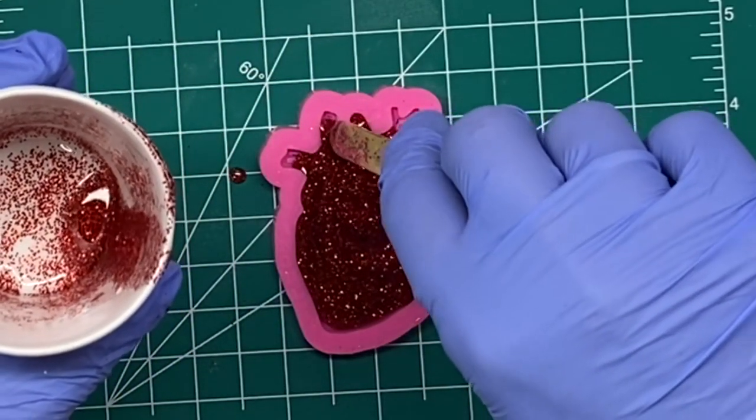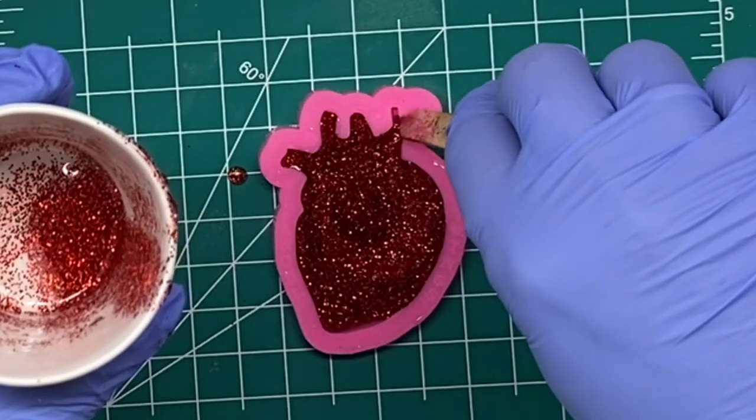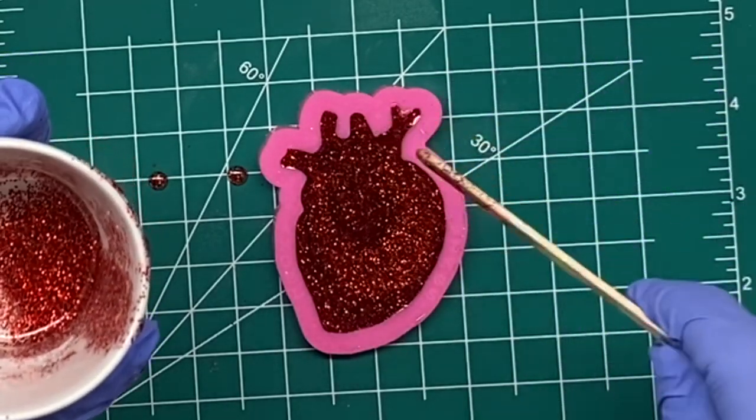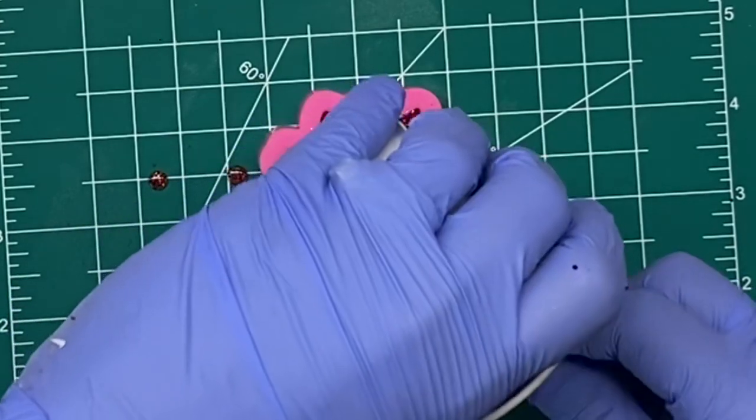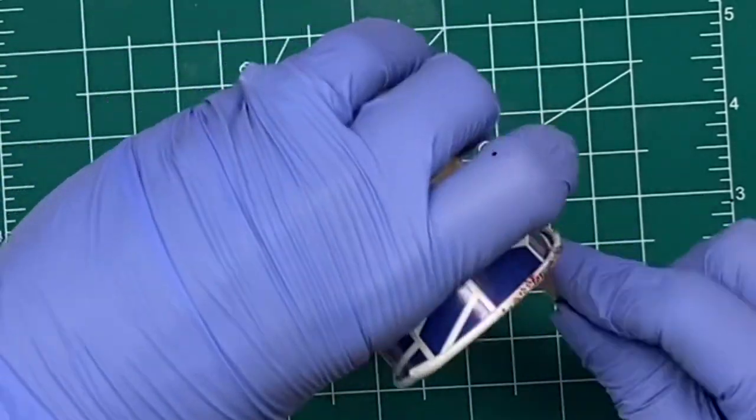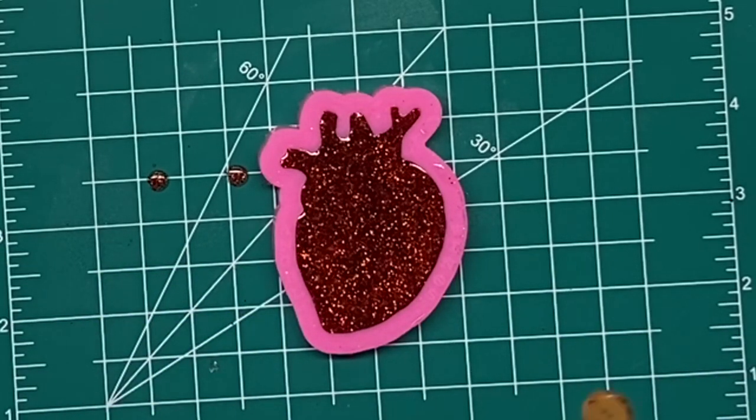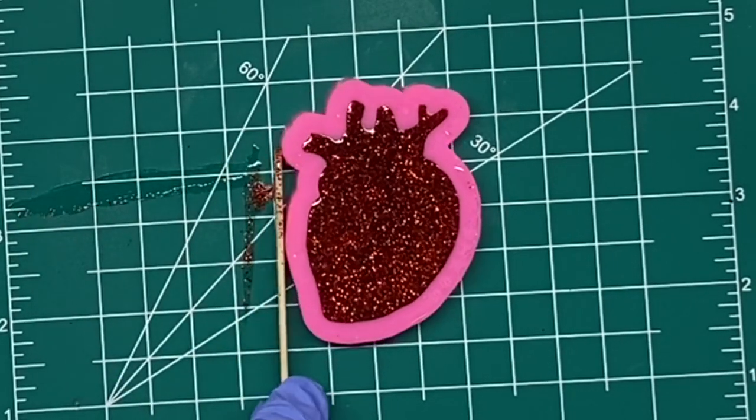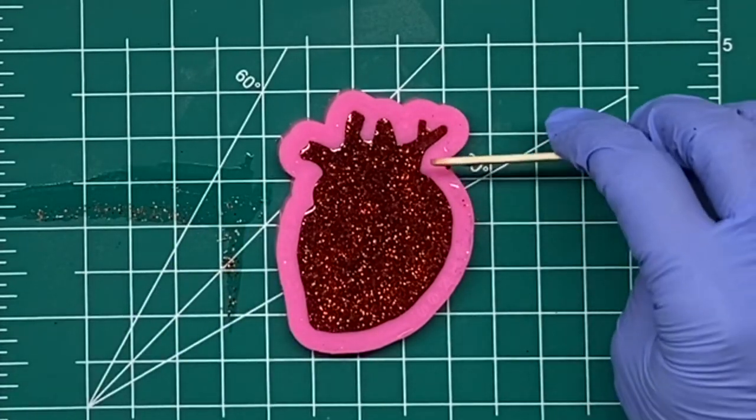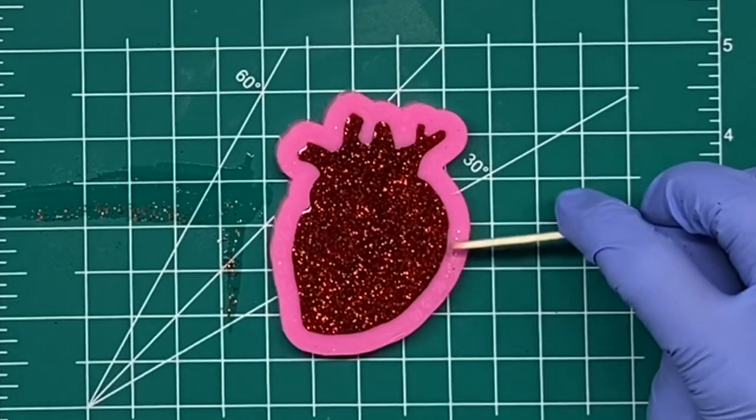So this is 10 cc's. Now this heart I did get from AliExpress. However, I have seen it on Amazon. So I know that it is there. And on AliExpress, it was under anatomical heart mold. So 10 cc's is perfect for this. It was a good guess. I've gotten to where I can guess pretty good these days.